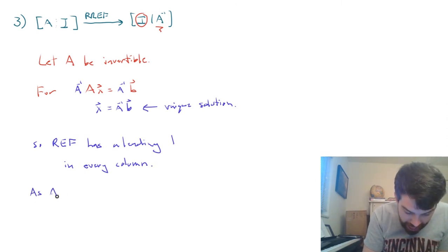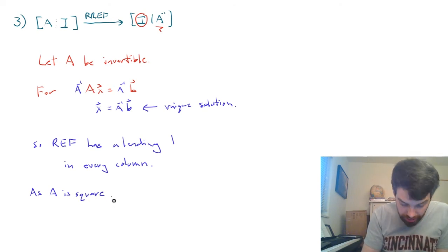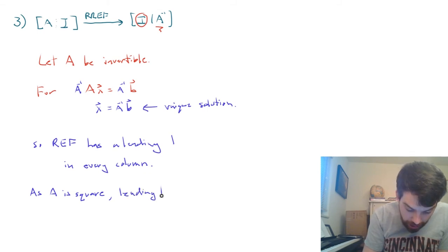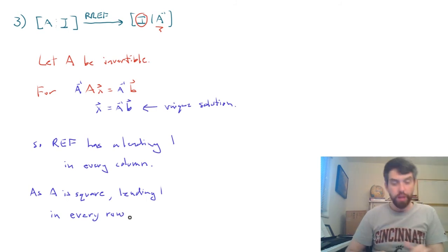And that's because it's going to be square. So as A is square, which gives us the same number of rows as columns, then we're going to have a leading one in every single row.